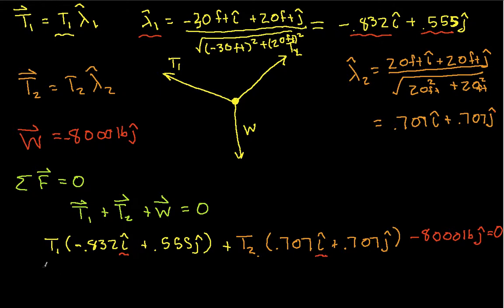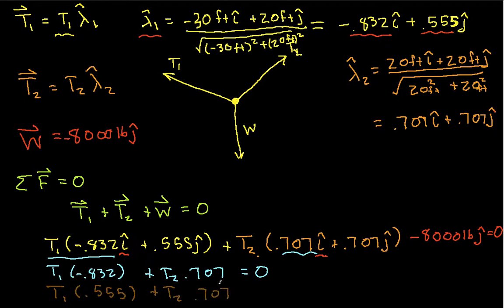So when I do this, when I actually take the x-component, I have t1 times minus 0.832, that's this guy here, plus t2 times 0.707, that's this guy here, and this is equal to 0. The y-component, we have t1 times 0.555, plus t2 times 0.707, minus 8,000, is equal to 0.